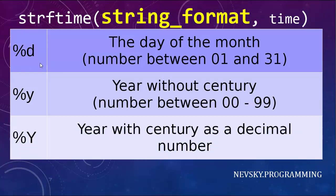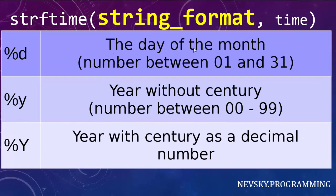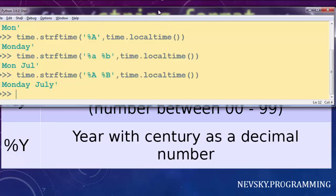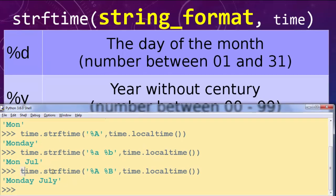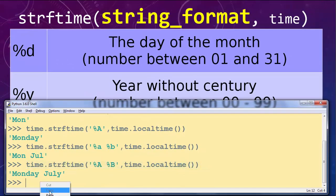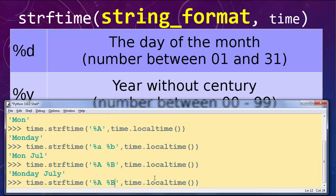We have directive %d which gives us the day of the month as a number between 1 and 31. Then directive %y gives us the year without century, a number between 0 and 99. And using %Y with a capital letter Y gives us the year with century as a decimal number.